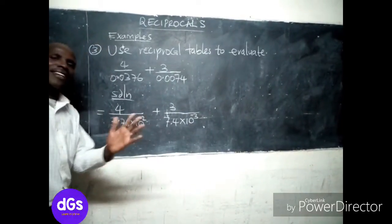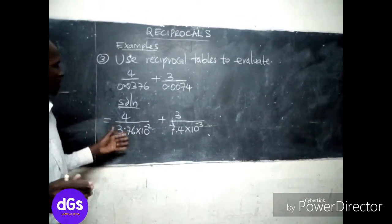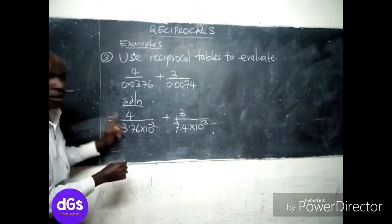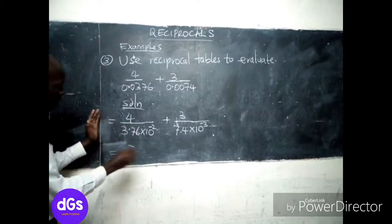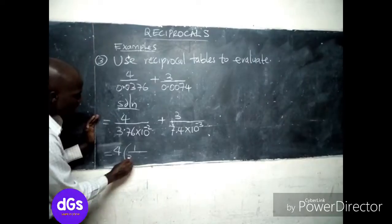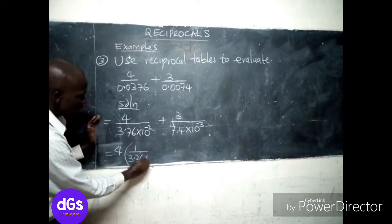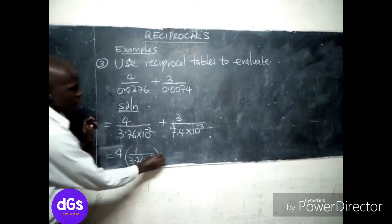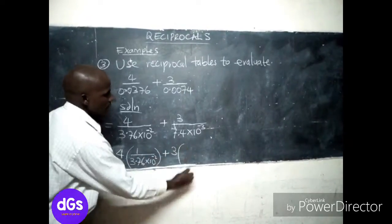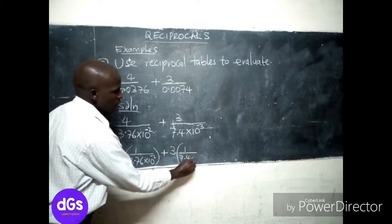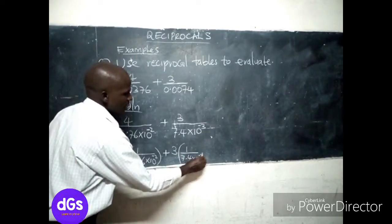Now the second part, I am going to separate these numbers in this manner: 4 times 1 over 3.76 times 10 power negative 2, then plus 3 times 1 over 7.4 times 10 power negative 3.